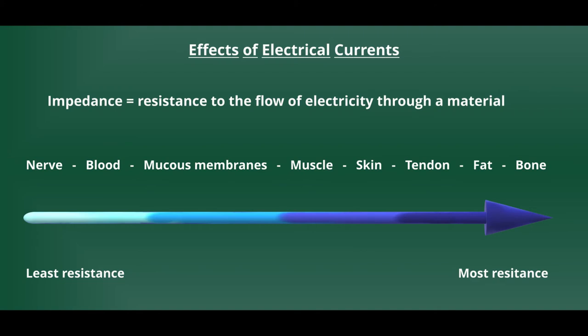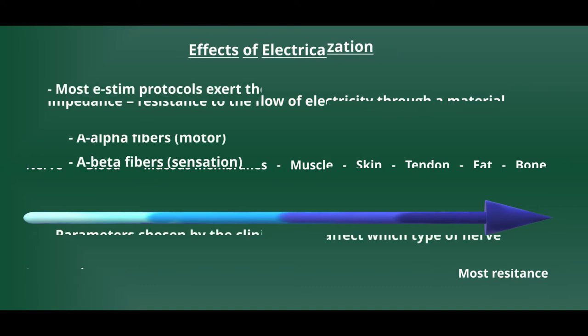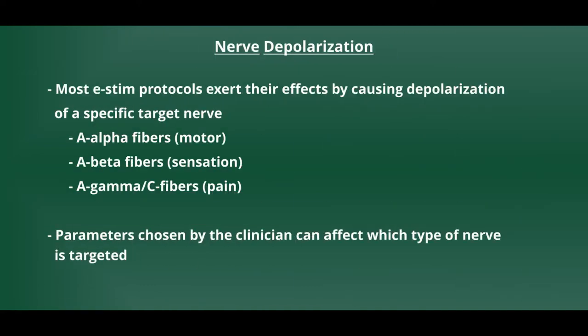Not every tissue in the human body will react the same way to electricity. Some structures such as nerves conduct electricity very well. Other tissues such as tendon and fat tend to have a higher impedance or a higher resistance to the flow of electricity. Based on the parameters we choose, we have the ability to target specific types of nerves. If our goal is to affect muscle tone, we want to focus on our A-alpha fibers. If our goal is pain management, we'll choose to try and focus on our A-beta or A-gamma fibers.